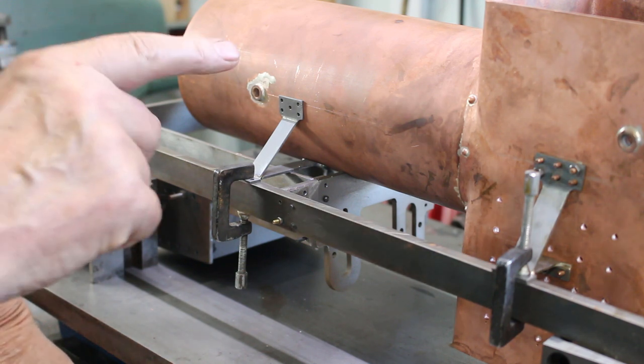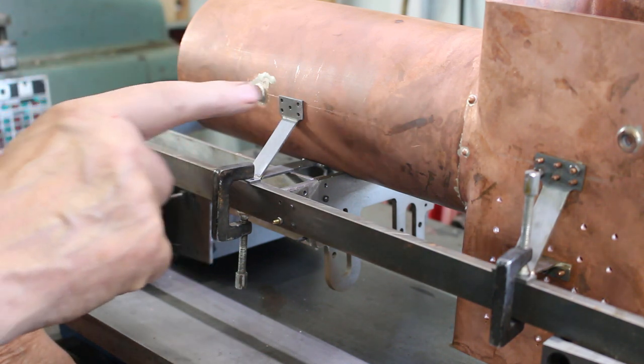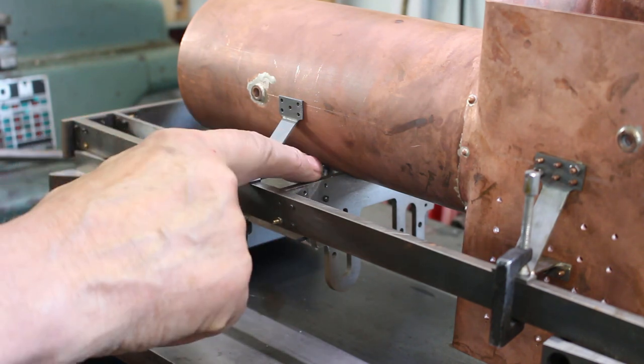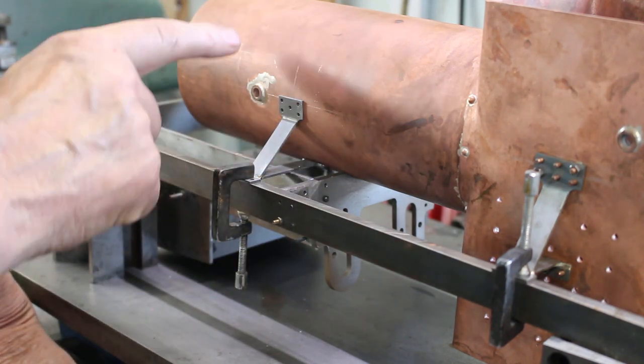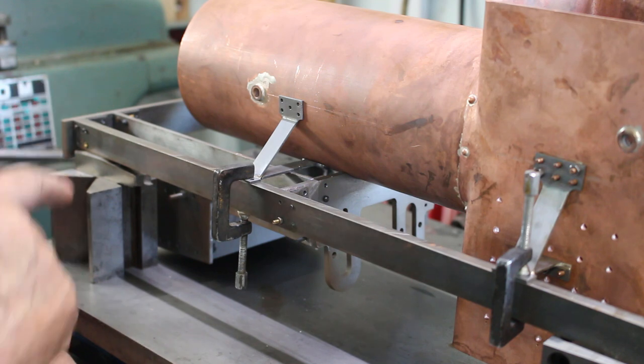I'm just going to put one rivet in the top portion of the bracket and one in the lower portion of the bracket through into the boiler to locate the bracket in the right place for silver soldering. The other rivet heads will just be dummies.